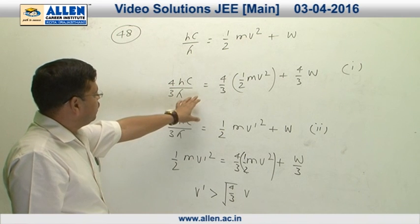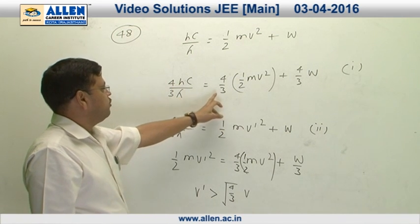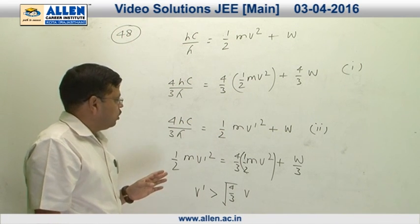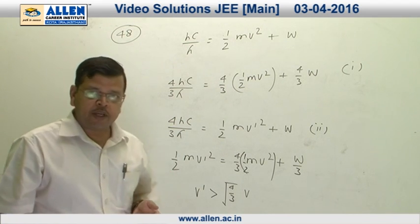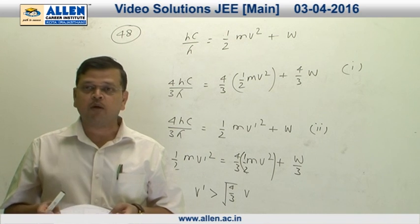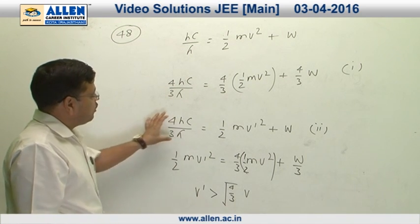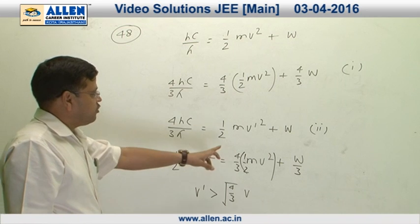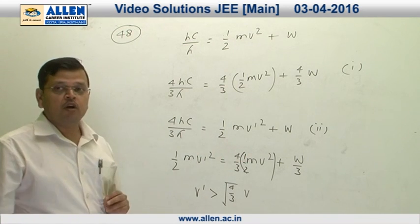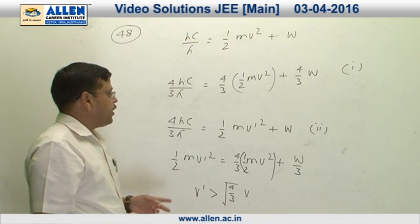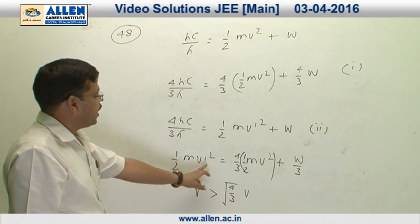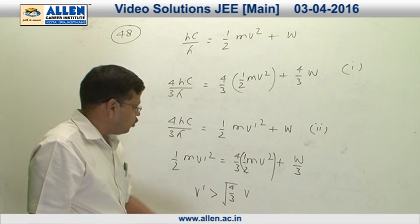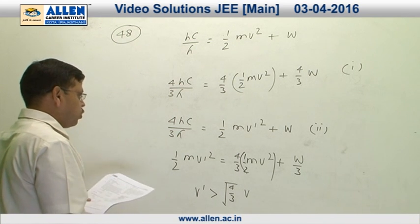Multiplying equation 1 by 4/3 gives: (4/3)(hc/lambda) = (1/2)mv'² + (4/3)W. The radiation is then replaced by another radiation of wavelength 3lambda/4. Applying the energy equation: (4hc)/(3lambda) = (1/2)mv'² + W. Equating the two equations, half mv'² = (4/3)(half mv²) + W/3, from which we conclude that v' > (2/sqrt(3)) v. So the correct option is 2.